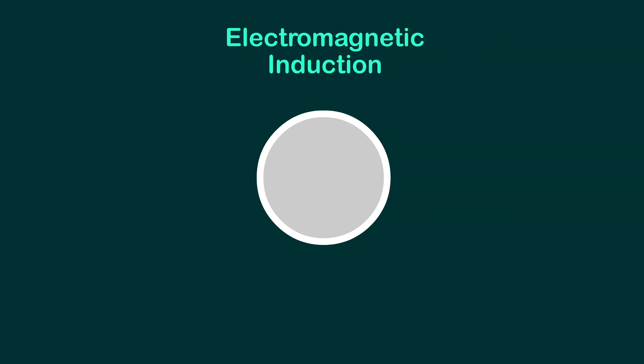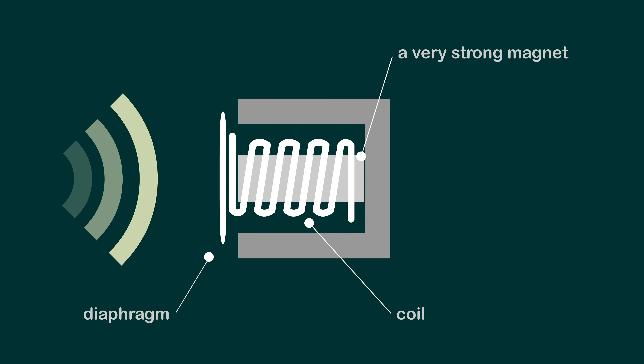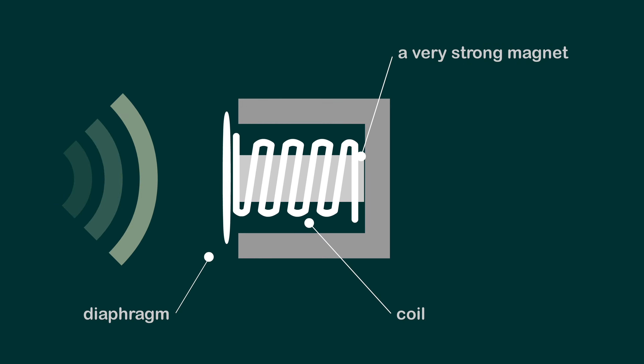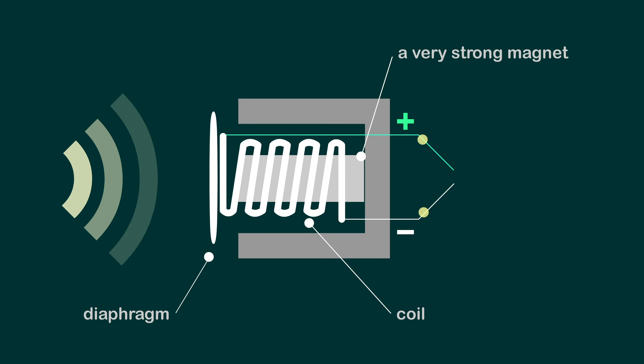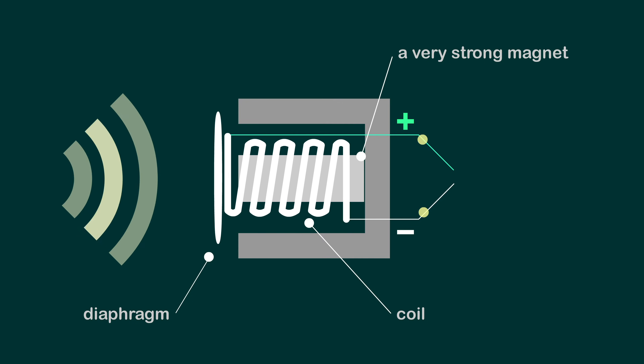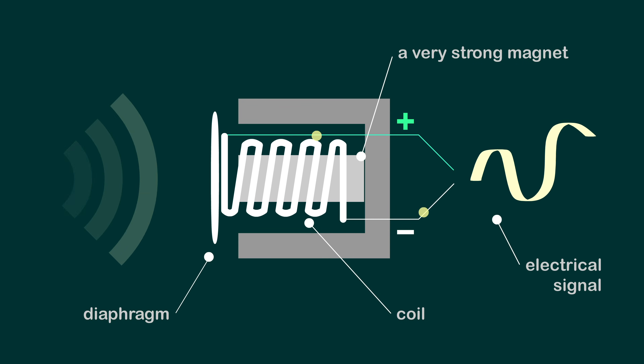Dynamic microphones use what is called electromagnetic induction to convert audio signals to electricity. All it means is that the diaphragm is attached to a coil of wire, and that coil is placed inside the magnetic field of a very strong magnet. As the sound waves come in, the diaphragm and the coil will start moving rapidly inside this magnetic field. As a result, current will start flowing in the circuit — this is electromagnetic induction. The pattern of movement caused by the sound waves will be translated exactly into the current output by the circuit, giving you an electrical signal that closely resembles the incoming audio signal. This operation is basically the reverse of how a speaker works.